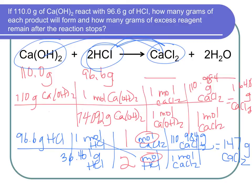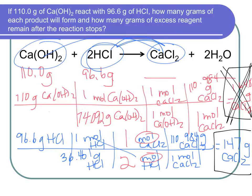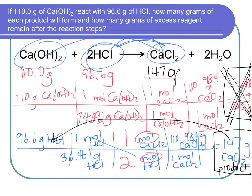Comparing the two numbers: 164.8 and 147. The smaller is 147, so that's the actual product formed — 147 grams of calcium chloride. The 164.8 gets crossed out. The HCl that produced the lower number is our limiting reactant (LR), and the calcium hydroxide is our excess.